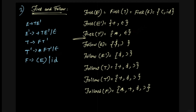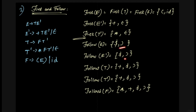Now if we look at the non-terminal for FOLLOW, for FOLLOW of E — since E is the start production, that's why it defaults to dollar. And if you want to see dollar as the answer, we can answer it. What do you want to see with dollar? If we see E on the right-hand side, we look at what follows it. You will see that FOLLOW of E is close bracket.